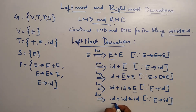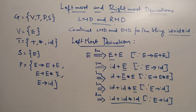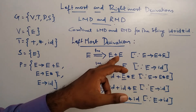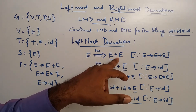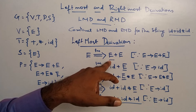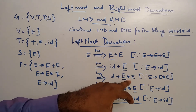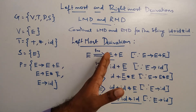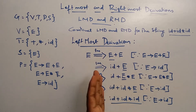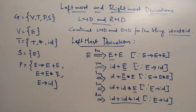So we have the required string. The main idea of leftmost derivation: here there are two E's — leftmost E is replaced first. All the leftmost non-terminals are replaced first. So we will replace the leftmost non-terminal first. Next we move to rightmost derivation.